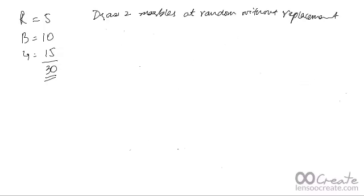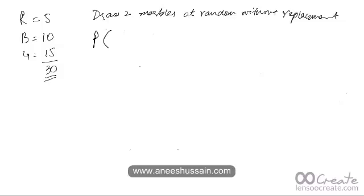Here's another example using the same data: what is the probability that you get one marble as blue and one as green? Remember, the order is not specified, so you can get them in any order. Think about this question and figure out the answer — in a moment we'll go through how to approach it.